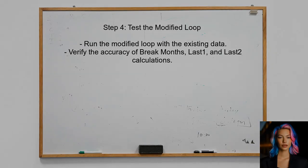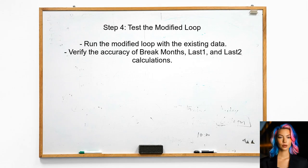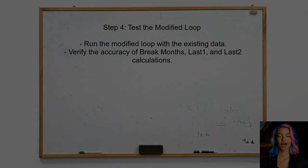Finally, the user should test the modified loop with their data to ensure that the calculations for the break months, last one, and last two variables are now accurate. This will confirm that the adjustments made are functioning as intended.